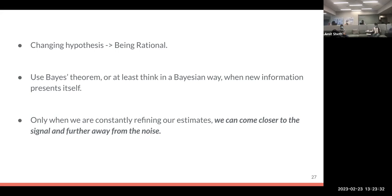He says that we have to use Bayes theorem, or at least we have to think in a Bayesian way when new information is coming towards us. At last he says that only if we are constantly refining our estimates on certain predictions or forecasts, then we can come to the signal and further away from the noise.